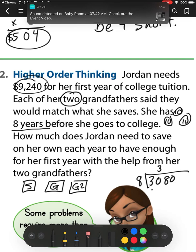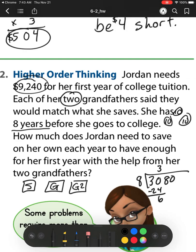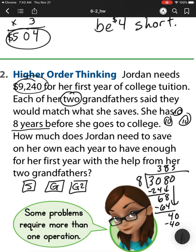3 goes into 30 3 times. Multiply and get 24. Subtract and get 6. 8 goes into 68 8 times. Multiply and get 64. Subtract and bring down and get 40. 8 goes into 40 5 times. Multiply. Subtract and get 0.